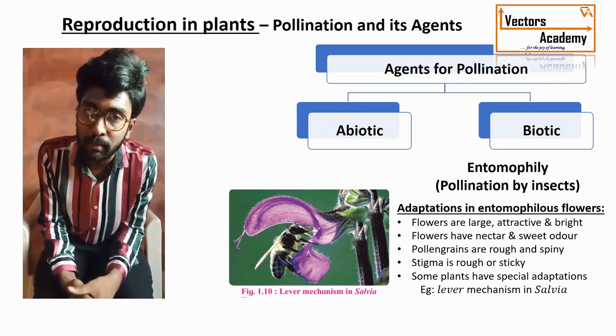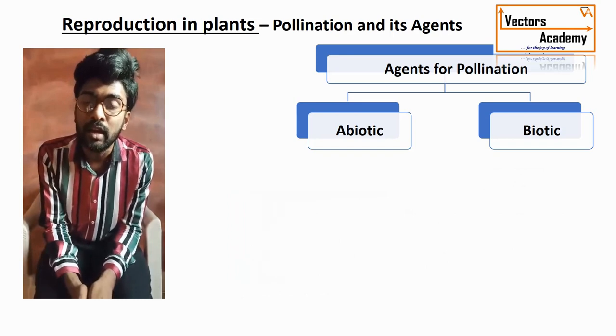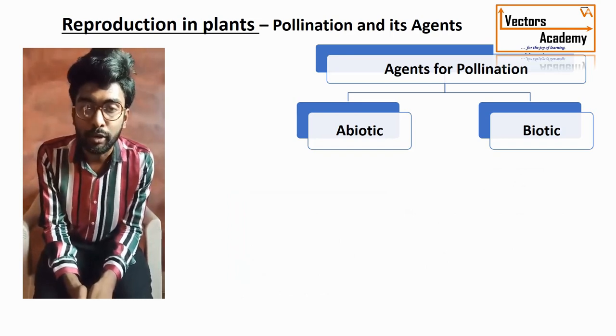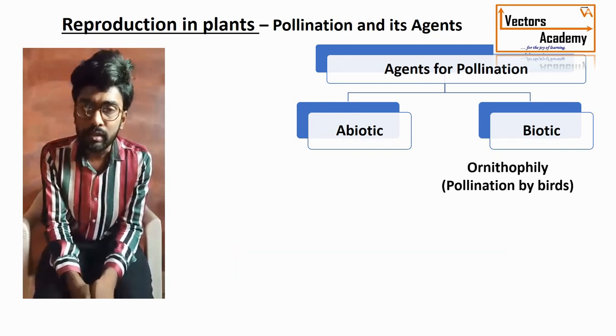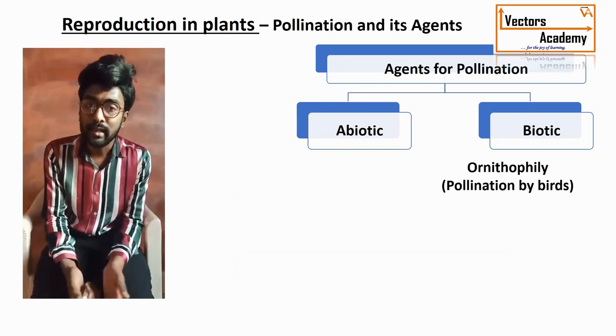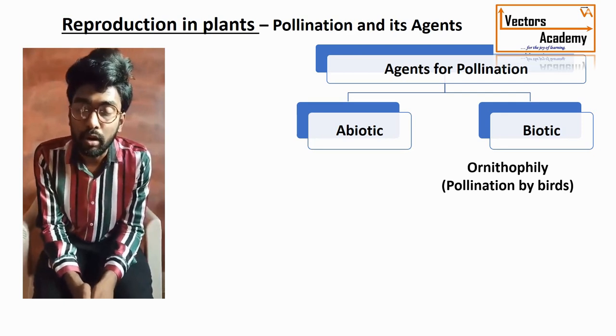The best example of entomophily is Salvia, which undergoes the lever or tube-pipe mechanism. Other examples include jasmine and rose.